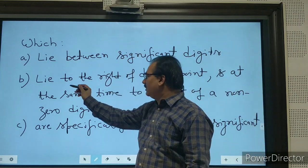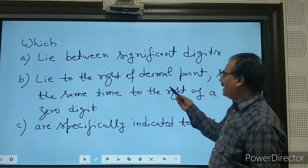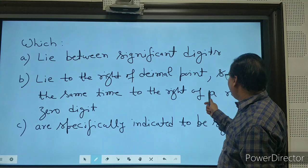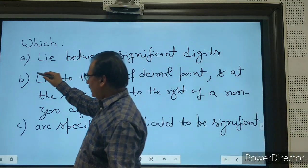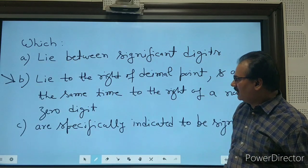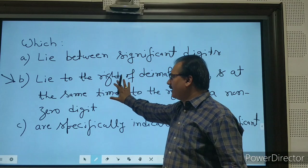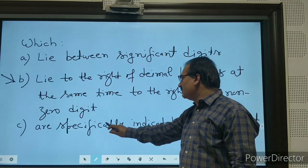Between significant digits lie to the right of the decimal point, and at the same time to the right of a nonzero digit. This is a very important line. Sometimes we forget this before finding out the significant digits, so you have to read again and again until it is clear to you, or specifically indicated to be significant.